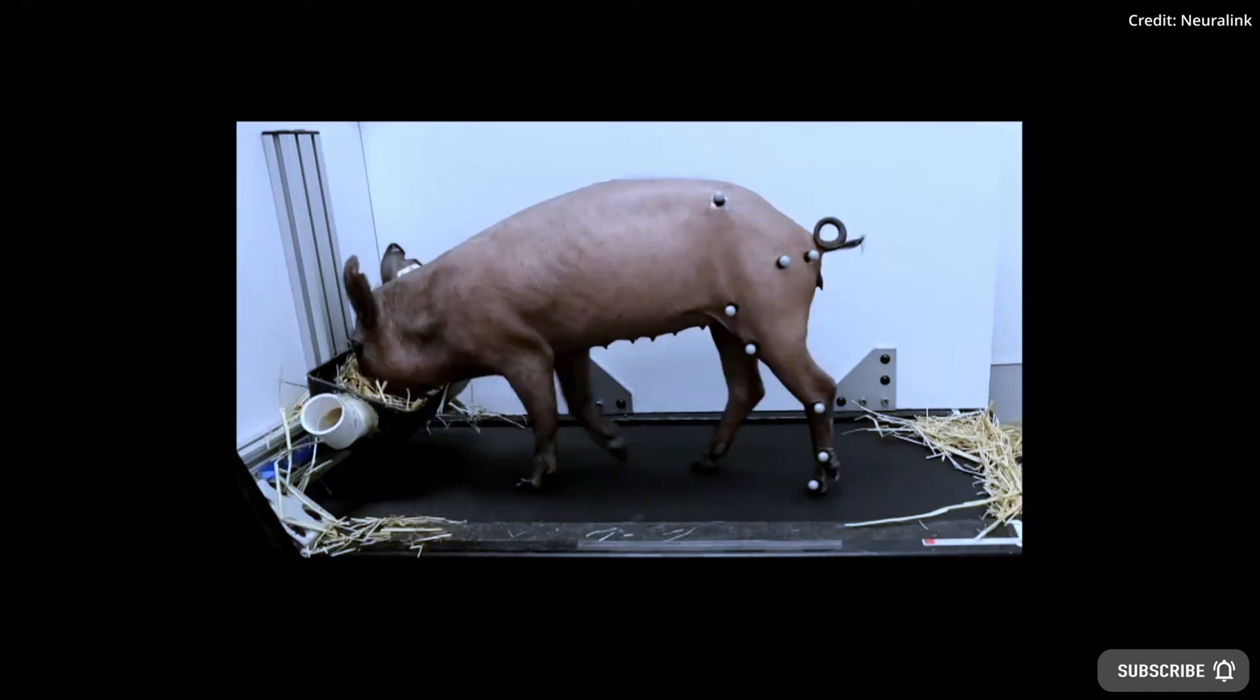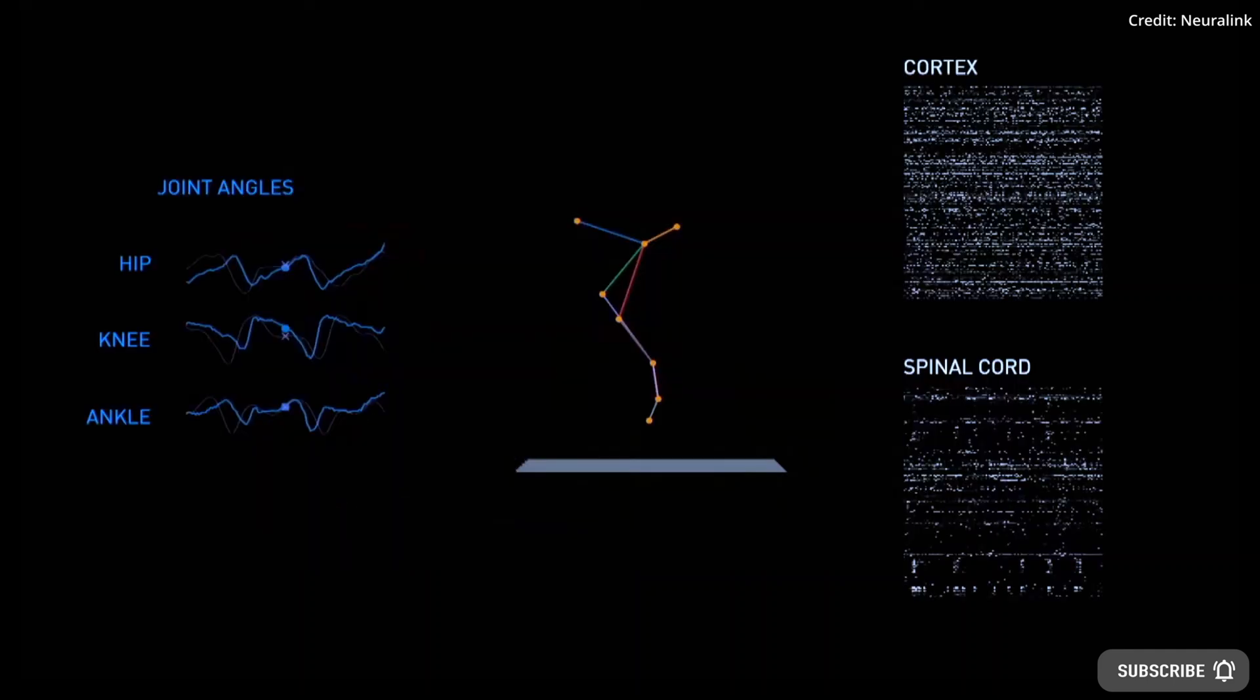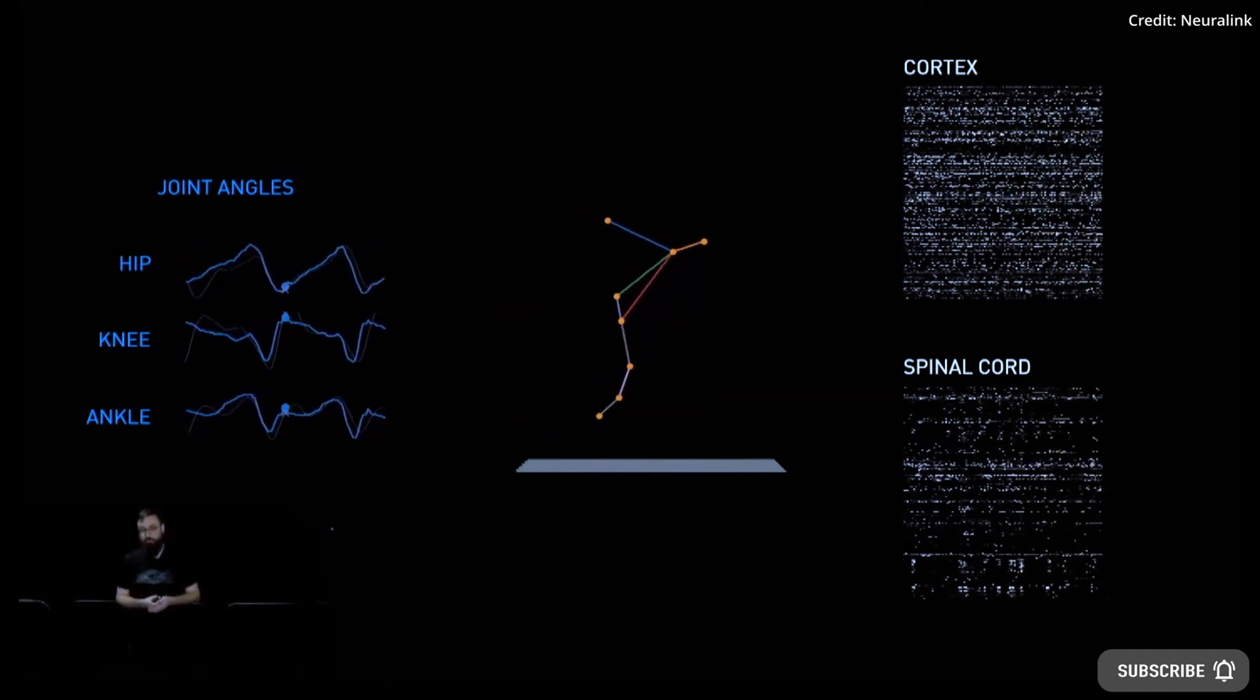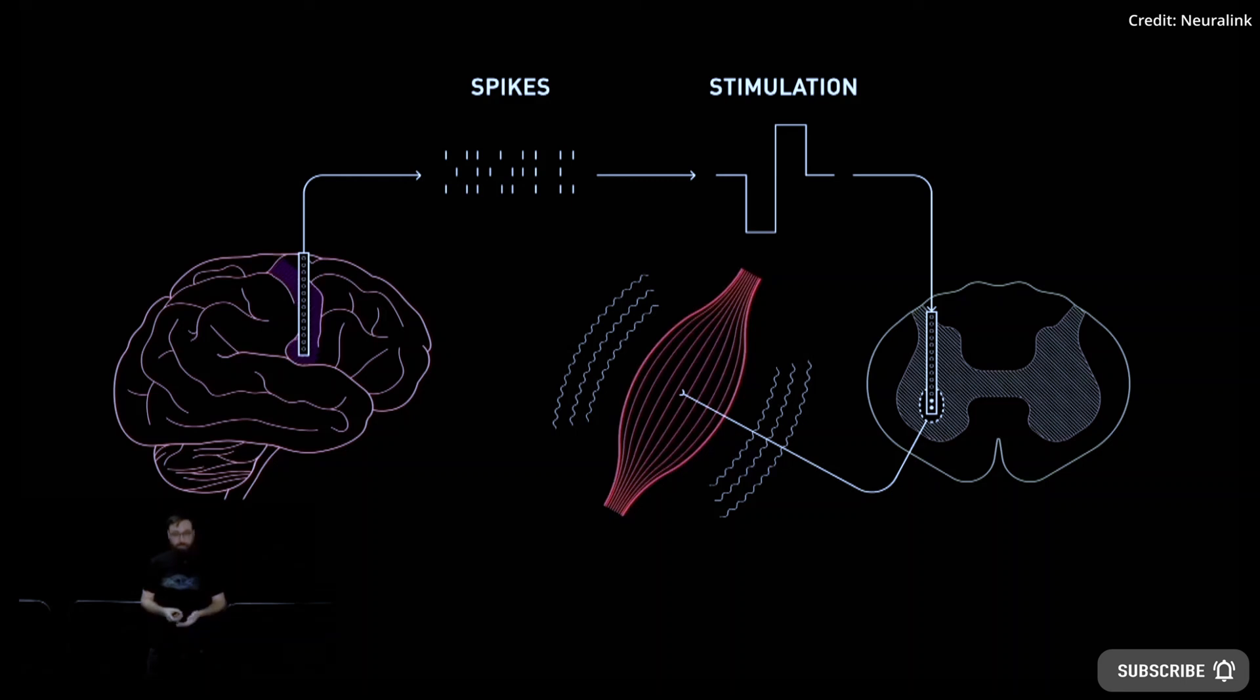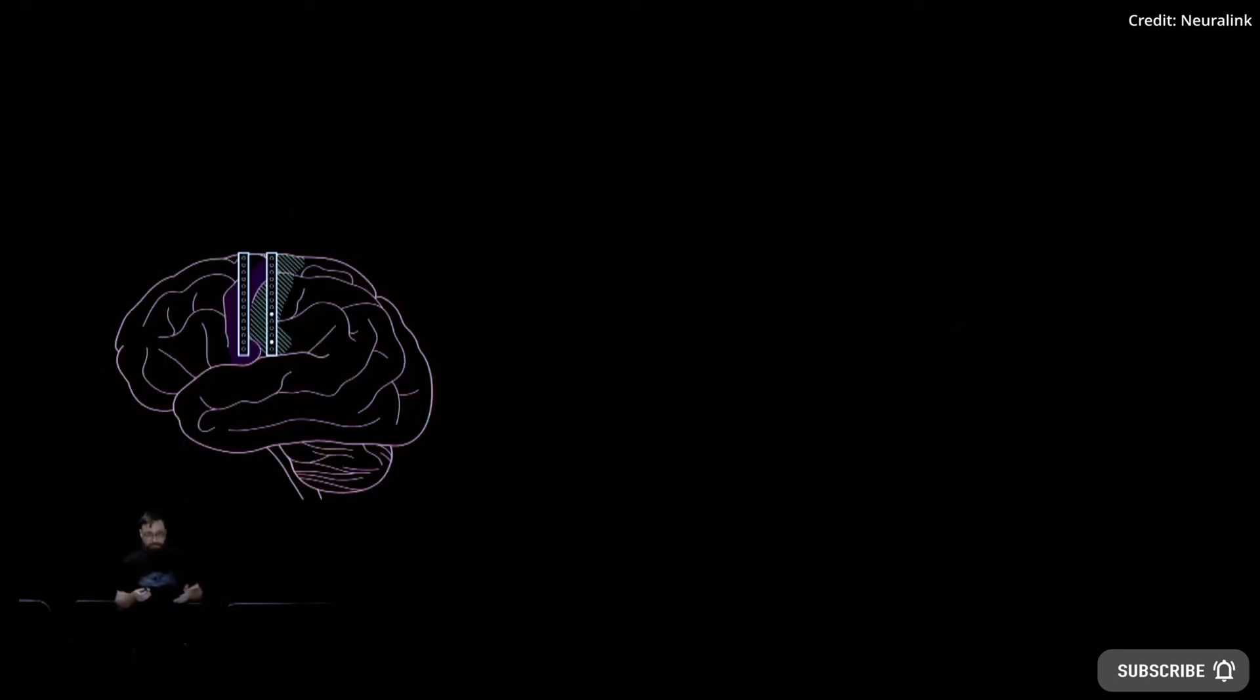Neuralink is currently focused on developing medical devices with the belief that these devices have the potential to help people with a wide range of injuries and neurological disorders and hopes to develop treatments for many of these conditions in the coming years. They expect that as the devices continue to scale and as the company learns to communicate with more areas of the brain, they will discover new non-medical applications for brain-computer interface devices.